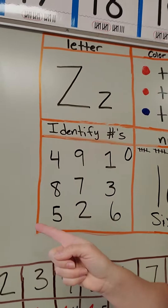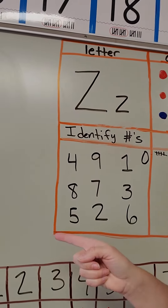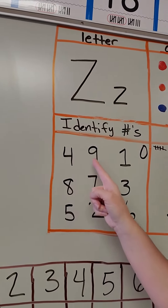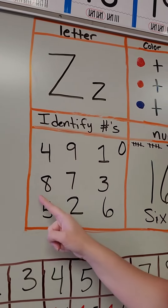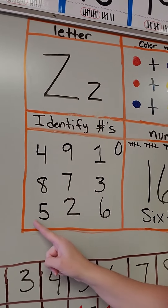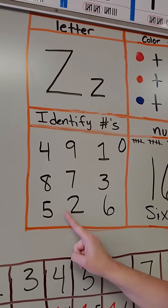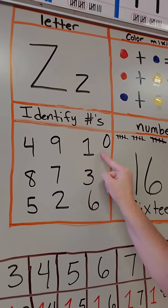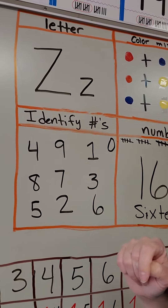We're also making sure that you identify your numbers: 4, 9, 1, 0, 8, 7, 3, 5, 2, 6 — and this together is 10.